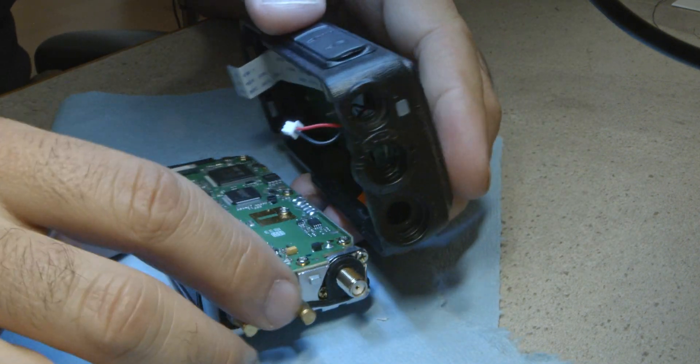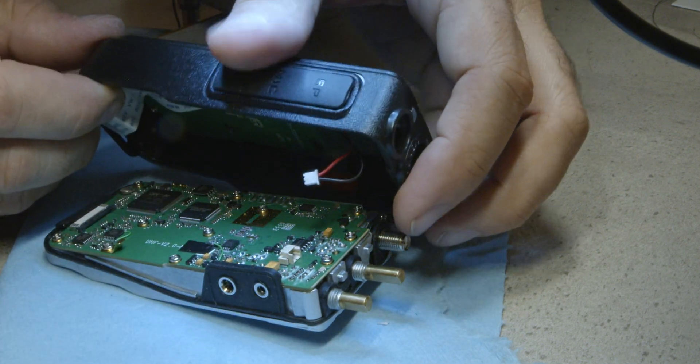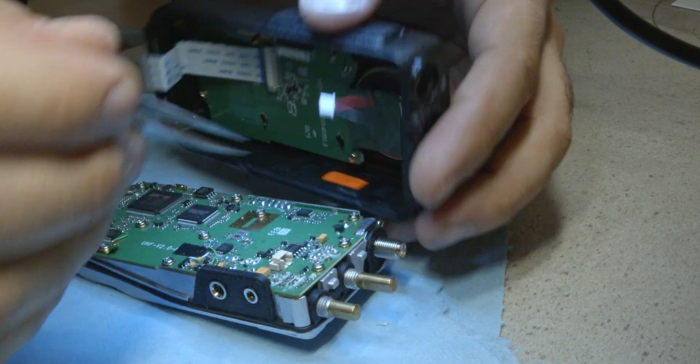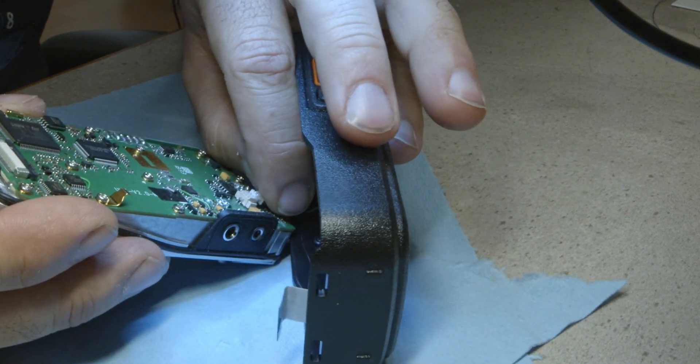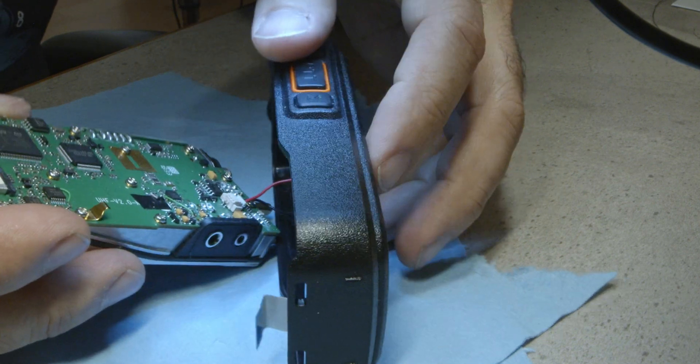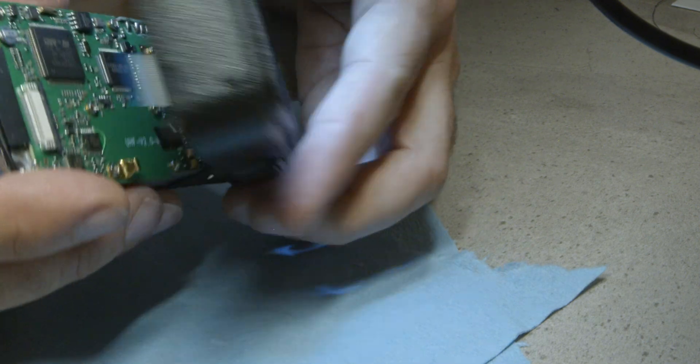Now the hard part. Putting the assembly back in the case. This would be a lot easier if I wasn't also trying to get a good angle for the camera, but first connect the speaker connection. Then place the control shafts through the holes in the case.